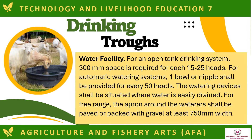For the drinking trough water facility, an open tank drinking system requires 300 mm space for each 15 to 25 heads. For automatic watering systems, one bowl or nipple shall be provided for every 50 heads. The watering devices shall be situated where water is easily drained. For free range, the apron around the waterer shall be paved or packed with gravel at least 750 mm wide.